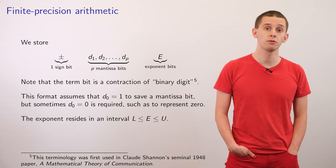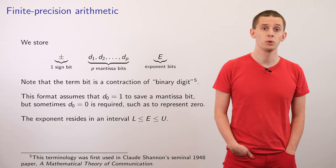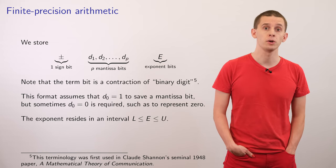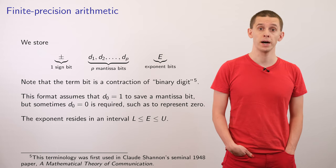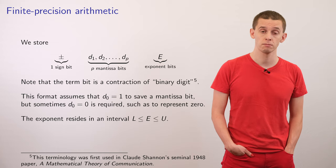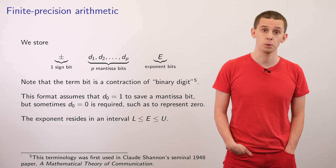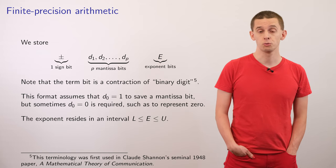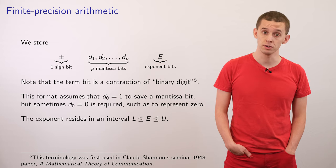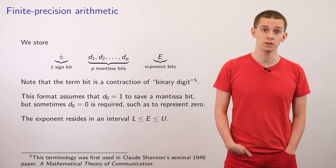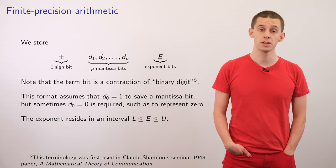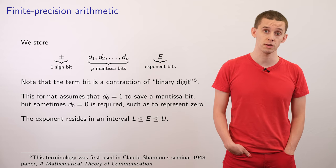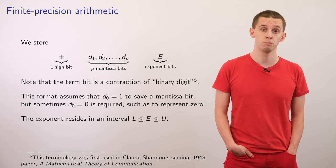In our computer hardware, we'll therefore store a number using three different components. We'll use one bit to represent the sign of the number, either plus or minus. We'll use p bits to represent the mantissa — the binary expansion of the number in scientific notation. And we'll use a number of bits to represent the exponent. It's worth noting that the term 'bit' is a contraction of binary digit, and this notation actually comes from Claude Shannon and his seminal paper, The Mathematical Theory of Communication, that laid the foundations for much of the field of information theory.